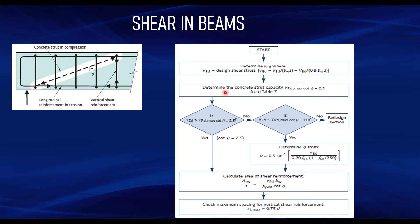After determining the design shear stress, you determine the concrete strut capacity vRd,max. The value of cot theta is between 2.5 and 1. You first determine vRd,max when cot theta equals 2.5 — the minimum allowable angle. If vRd,max at cot theta = 2.5 is greater than your design shear stress vEd, you can design using the minimum angle, substituting cot theta = 2.5 in the shear reinforcement formula. If vRd,max at cot theta = 2.5 is less than vEd, you must check whether vEd also falls below vRd,max at cot theta = 1.